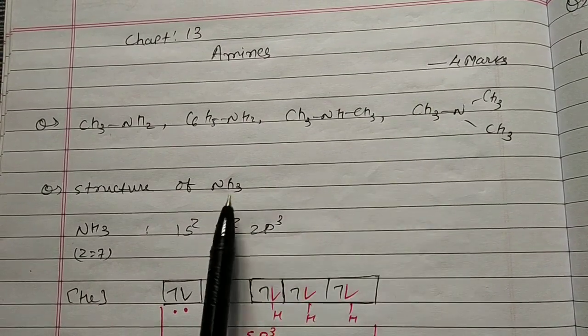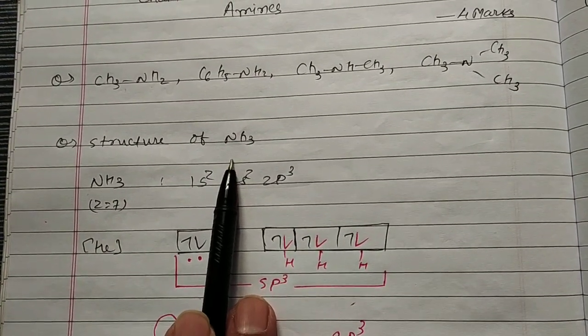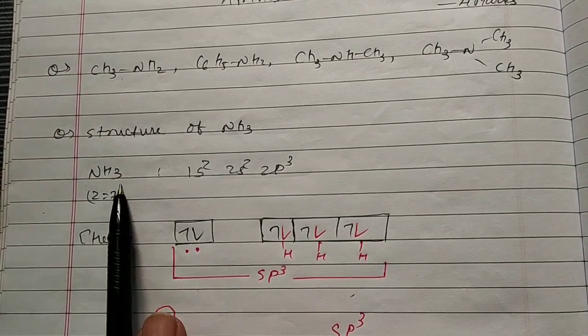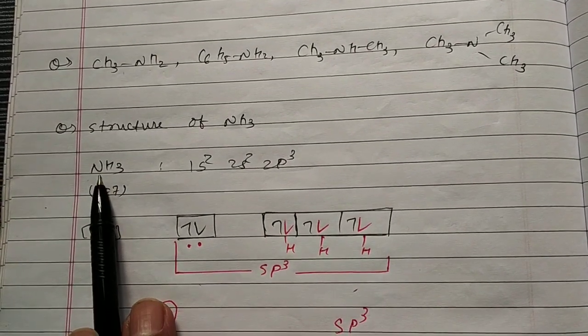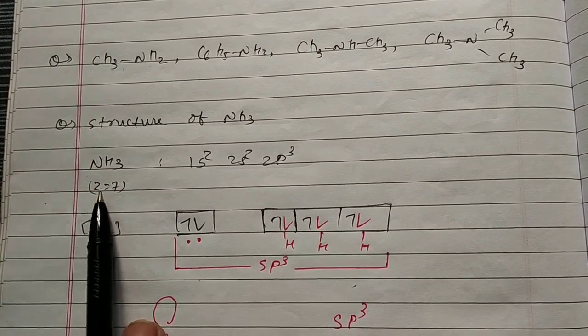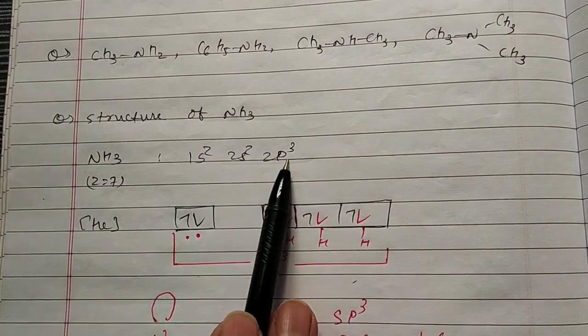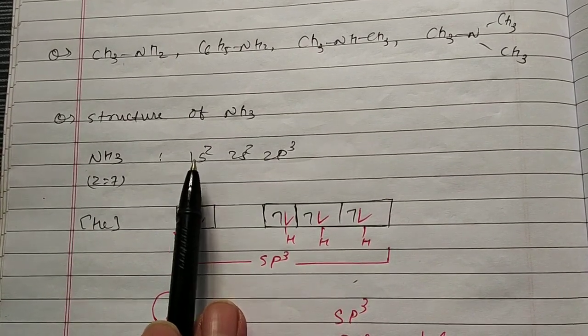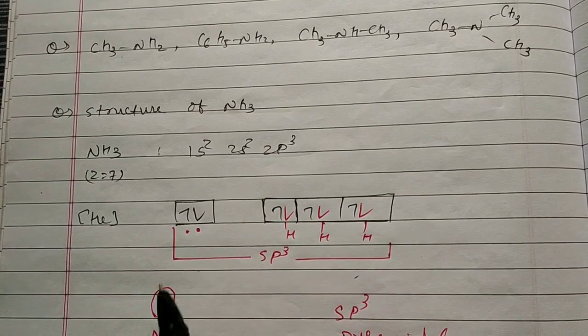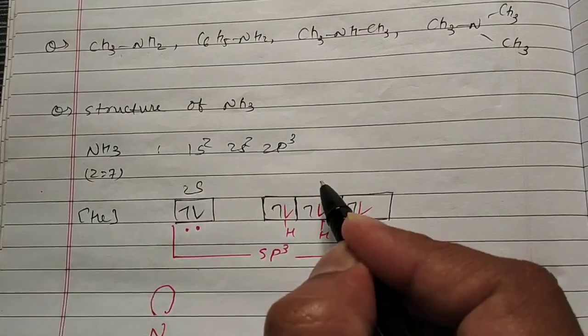First part of this chapter is structure of ammonia. We move to this somewhat inorganic part, NH3. Nitrogen is the center element where Z equals 7. Electronic configuration of nitrogen is 1s² 2s² 2p³. This is shorthand denoted by helium core, this is 2s and this is 2p.